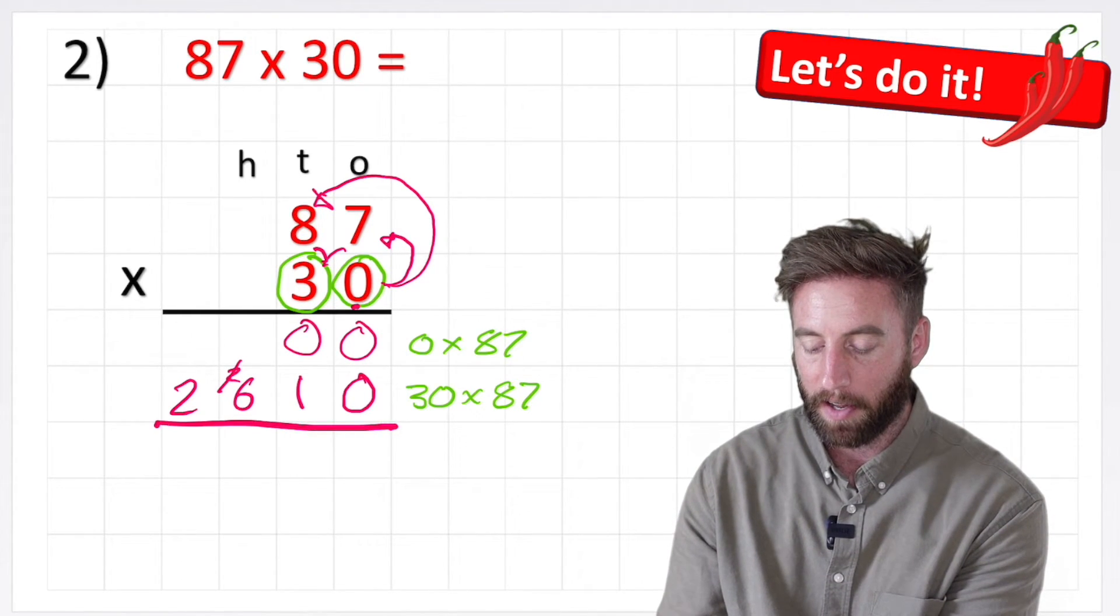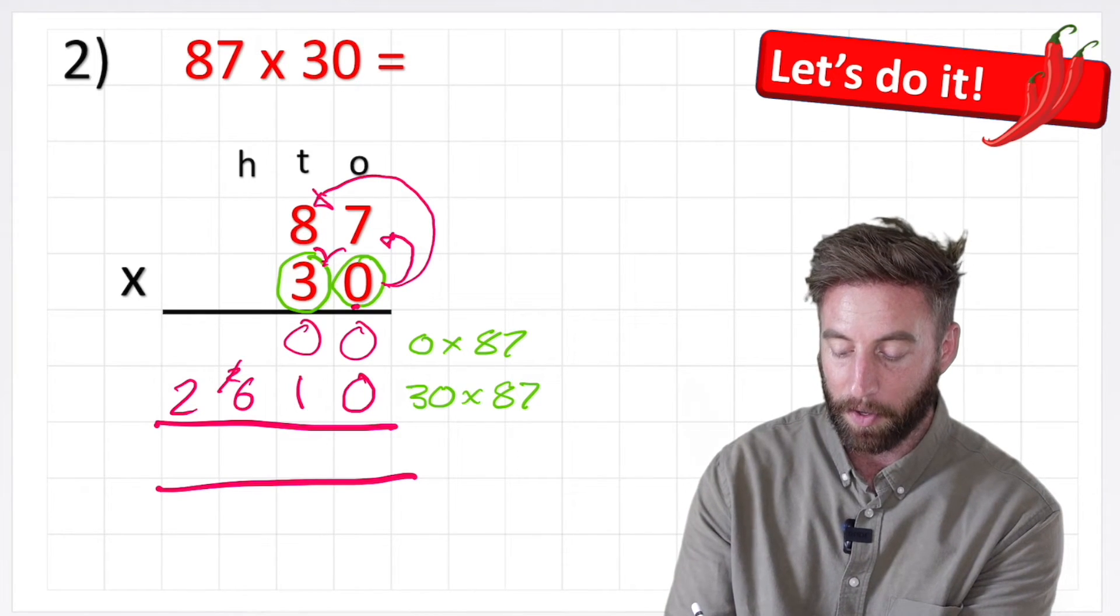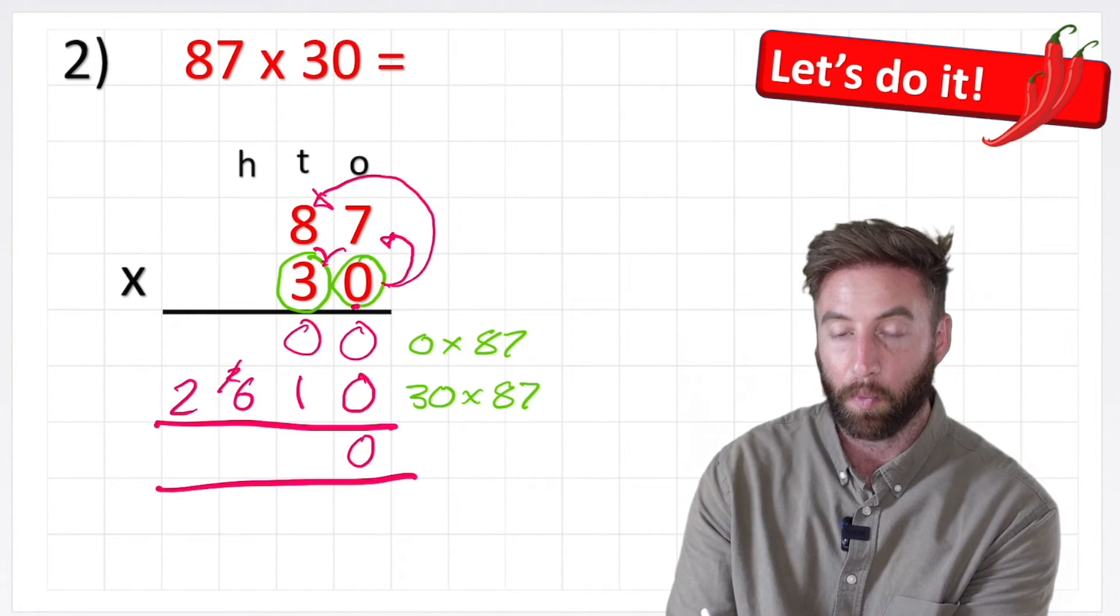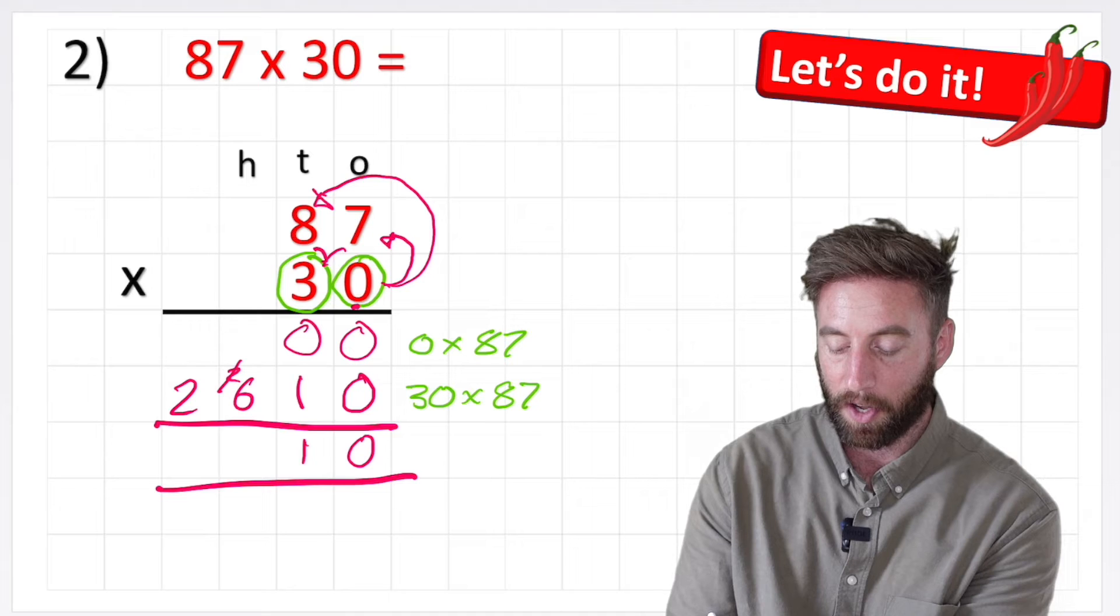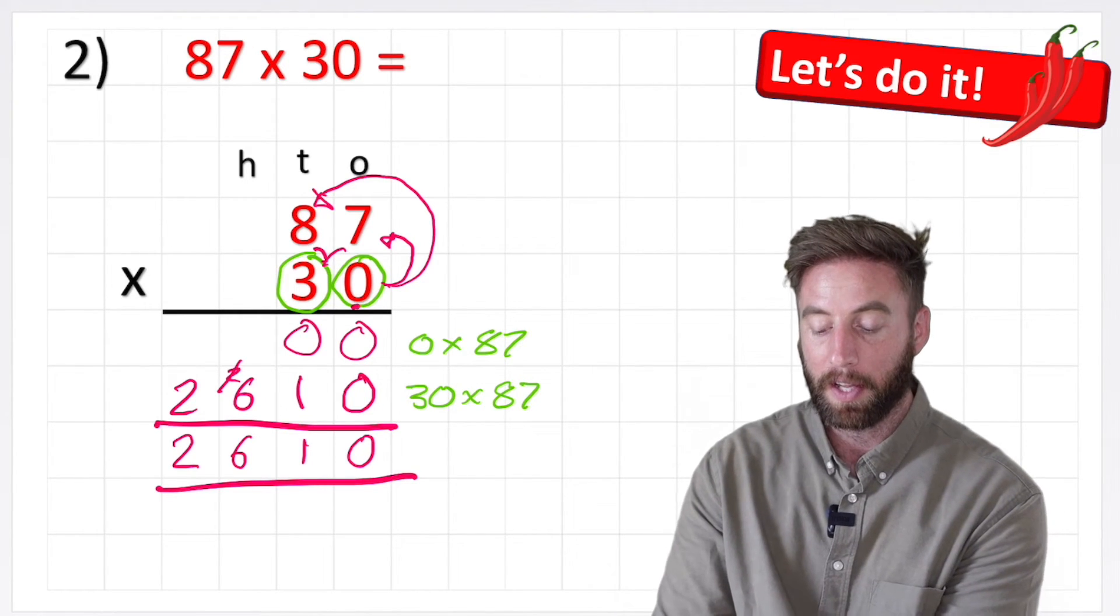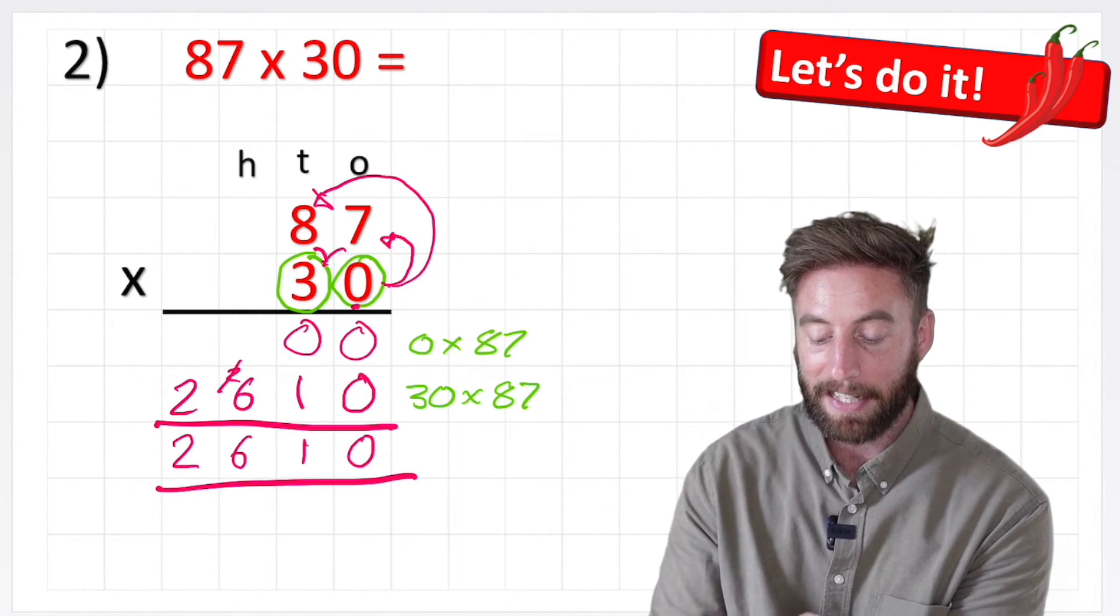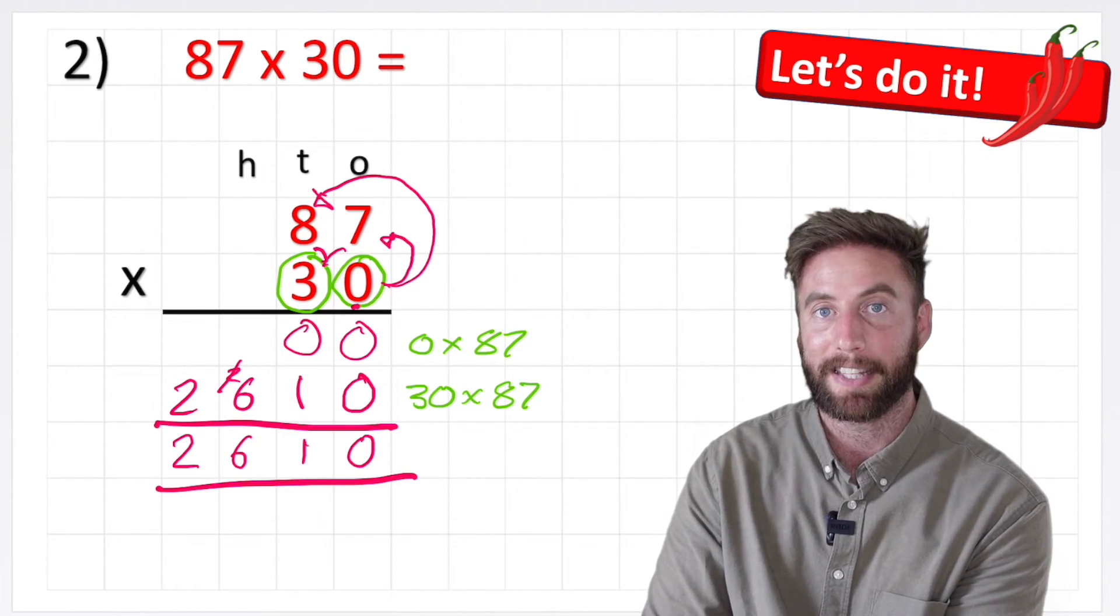Put my equals line and I'm ready to add up. 0 and 0 is 0. 0 and 1 is 1. 6 on its own and 2 on its own. So there we go, the answer to 87 times 30 is 2,610.